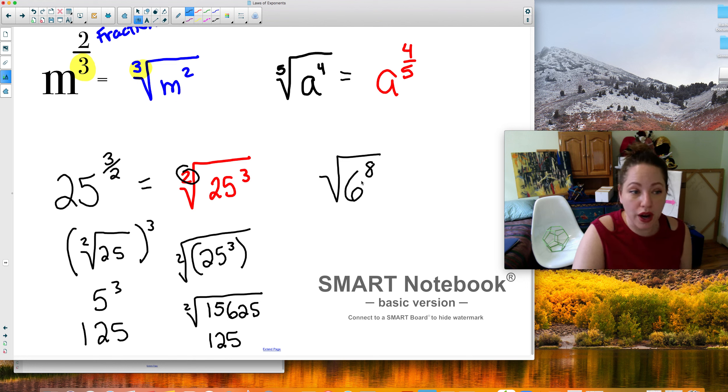Here, same thing. I'm going to rewrite it in exponential form because I don't know what the square root. Remember if there's no number here, there's a 2. So if there's no number, you write in a 2. If there's a blank there. So I rewrite this in exponential form. The exponent stays on top. The root goes on bottom. If there's no number, it's a 2.